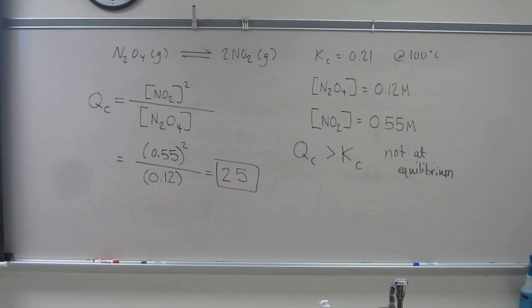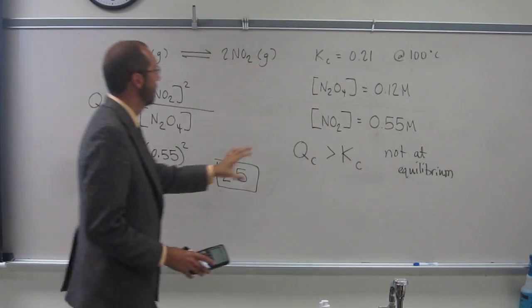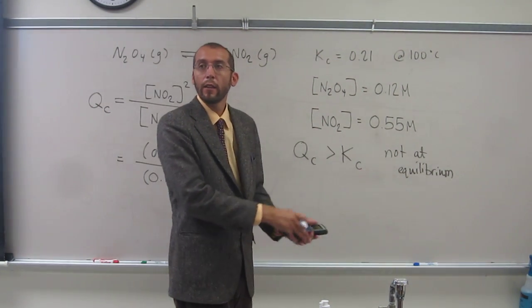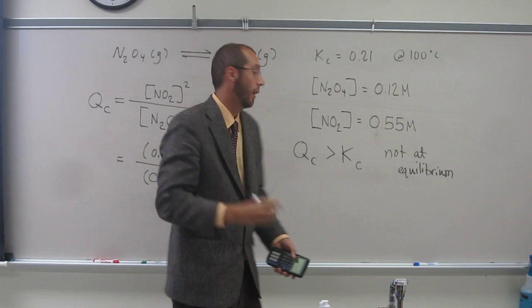Then the next thing it asks us, well, since it's not, which direction is it progressing? Is it progressing towards products or towards reactants? Towards reactants, right? So if Q is bigger than K, then it's going back towards reactants. OK?